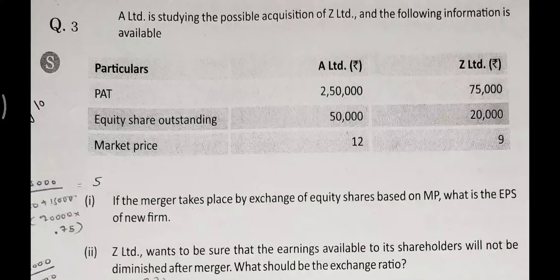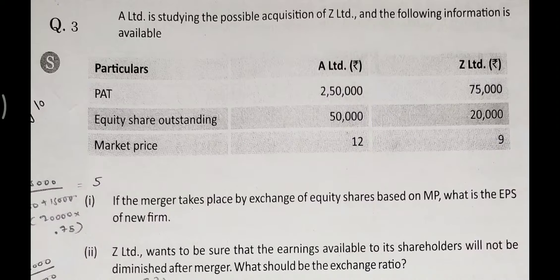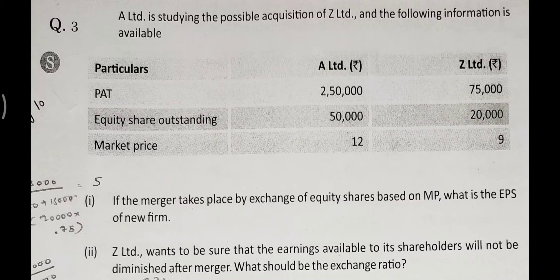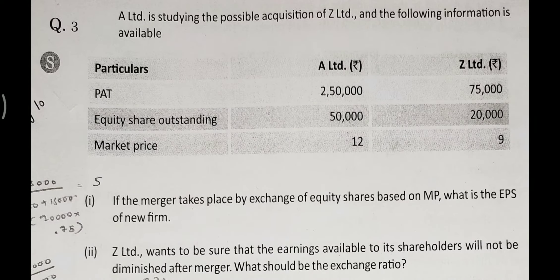So let's start question number 3. Let's read: A Limited is studying a possible acquisition of Z Limited. First, identify the acquirer and target company. A Limited is the acquirer because it is studying the possible acquisition of Z Limited. So A is the acquire company and Z is the target company. The following information is given.